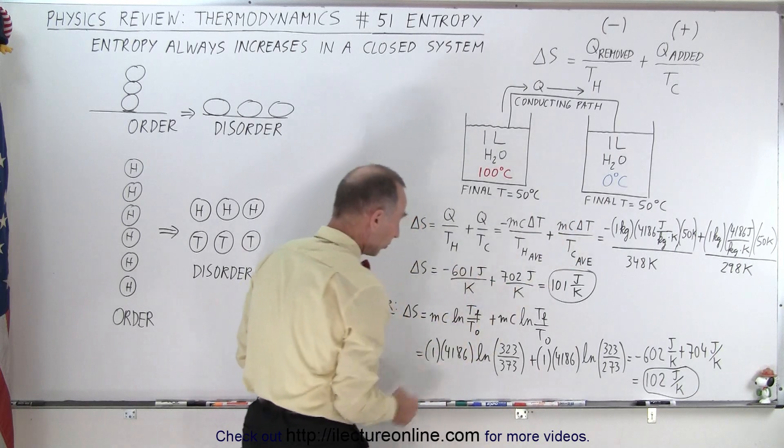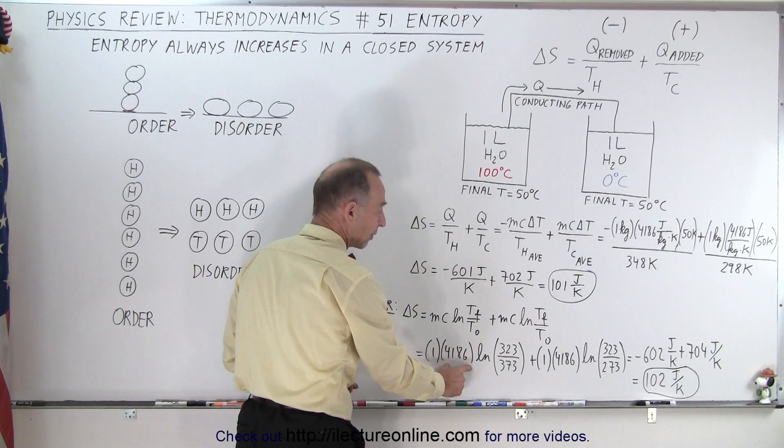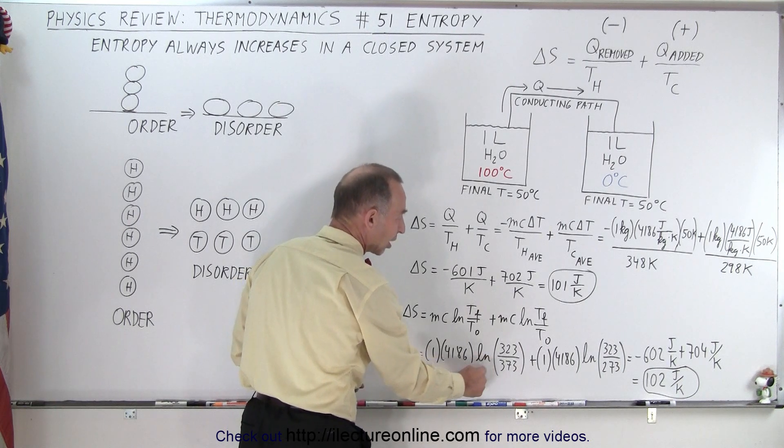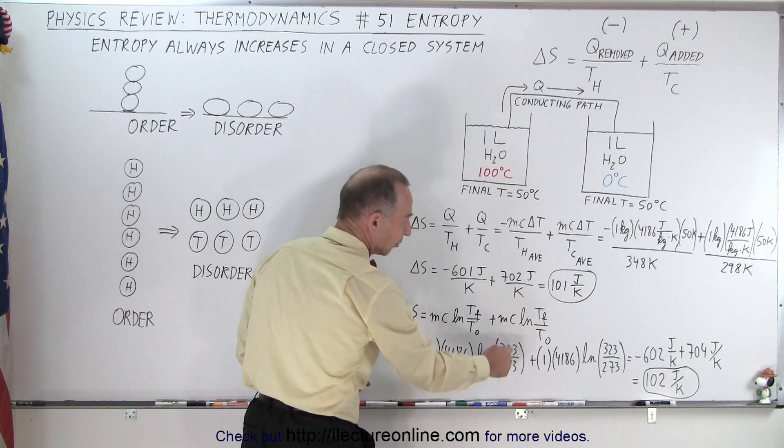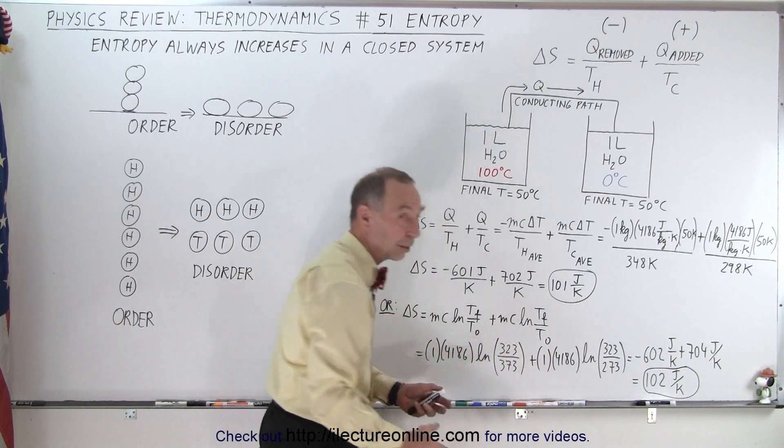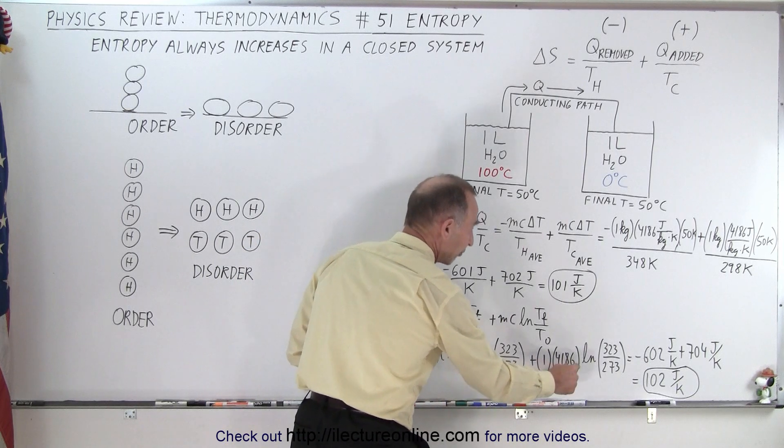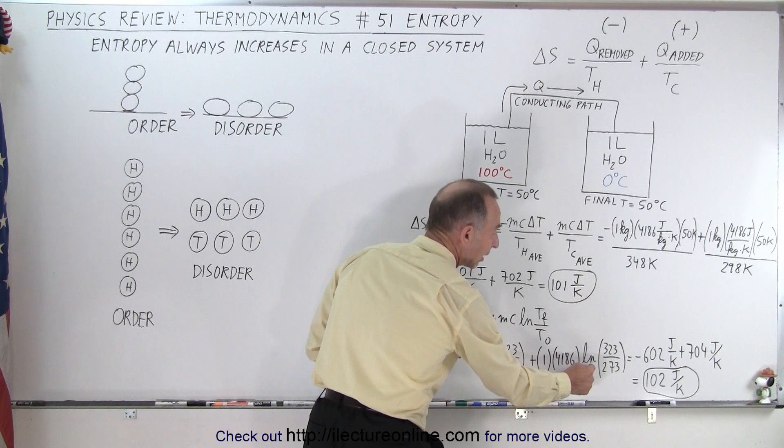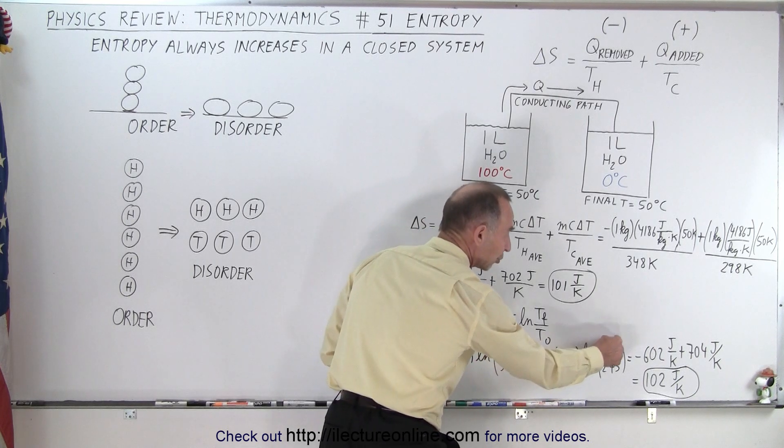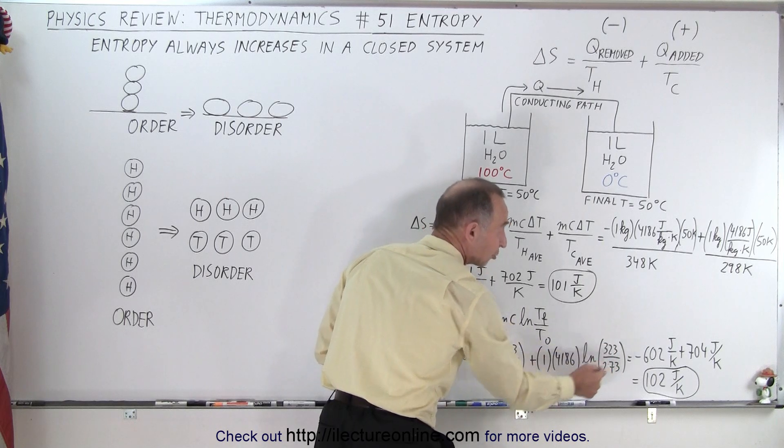Using the very same numbers, 1 kilogram, 4186 joules per kilogram per Kelvin times the natural log of the final temperature divided by the initial temperature for the hot reservoir. Since the numerator is smaller than the denominator, that will end up being a negative quantity. And the same here, 1 kilogram, 4186 joules per kilogram per Kelvin degree times the natural log of the final temperature over the initial temperature. This will be positive value because the final is bigger than the initial.